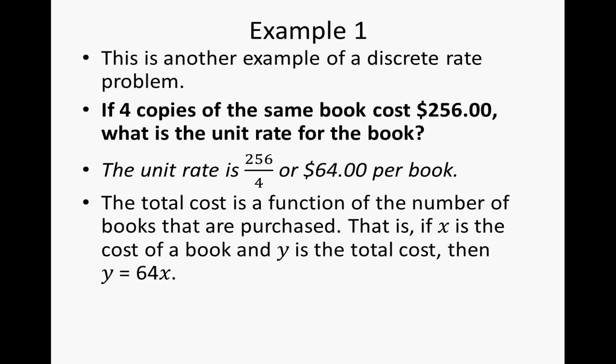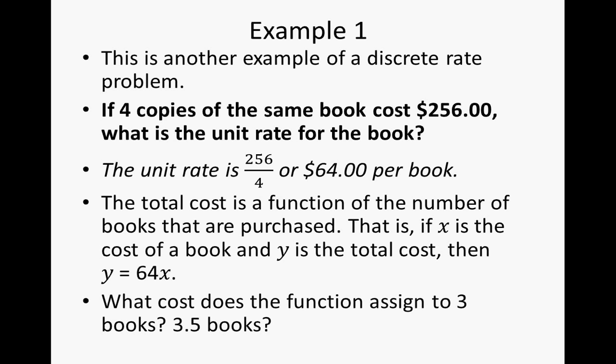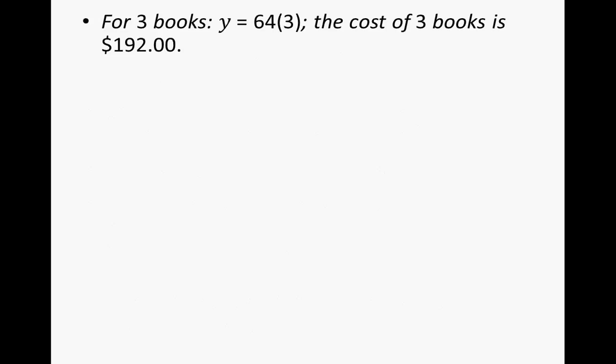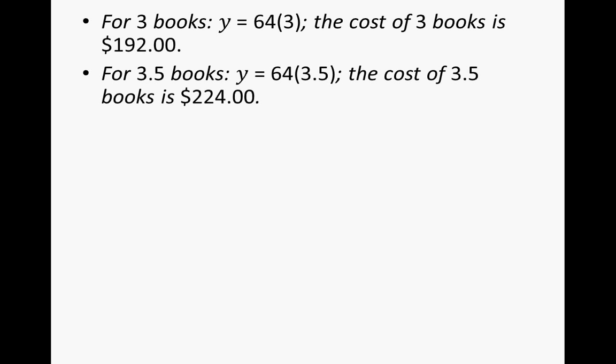The total cost is a function of the number of books that are purchased. That is, if x is the cost of a book and y is the total cost, then y is equal to 64 times x. What cost does the function assign to three books or three and a half books? Well, for three books, y is 64 times 3, the cost of three books is $192. For three and a half books, y is equal to 64 times 3.5, the cost of three and a half books would be $224.